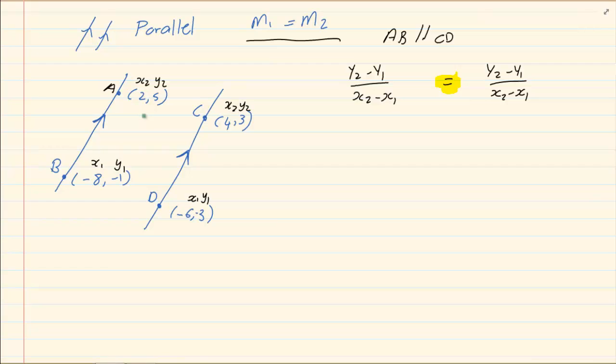Let us start with line AB. So we've got 5 minus minus 1 all over 2 minus minus 8 giving us 6 over 10 which is 3 over 5.